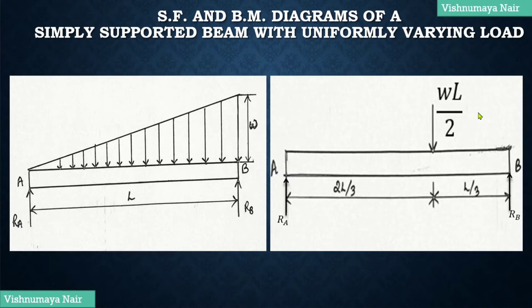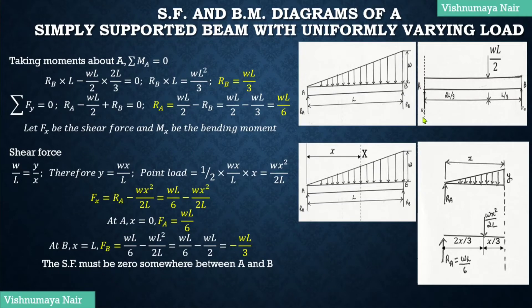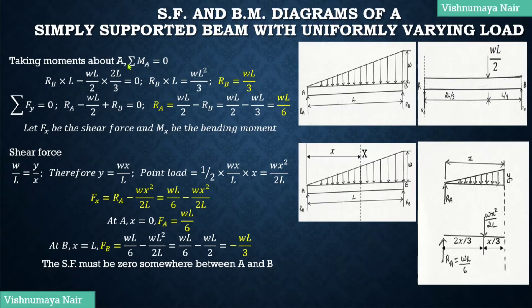As a result of the externally applied load, we will have reactions at both the supports of the simply supported beam. Let Ra and Rb be the reactions at the ends A and B. These reactions Ra and Rb can be found out by taking the moments about end A or moments about end B. We know that Ma equal to Mb equal to 0 for a simply supported beam. Therefore, summation Ma will be equal to 0.